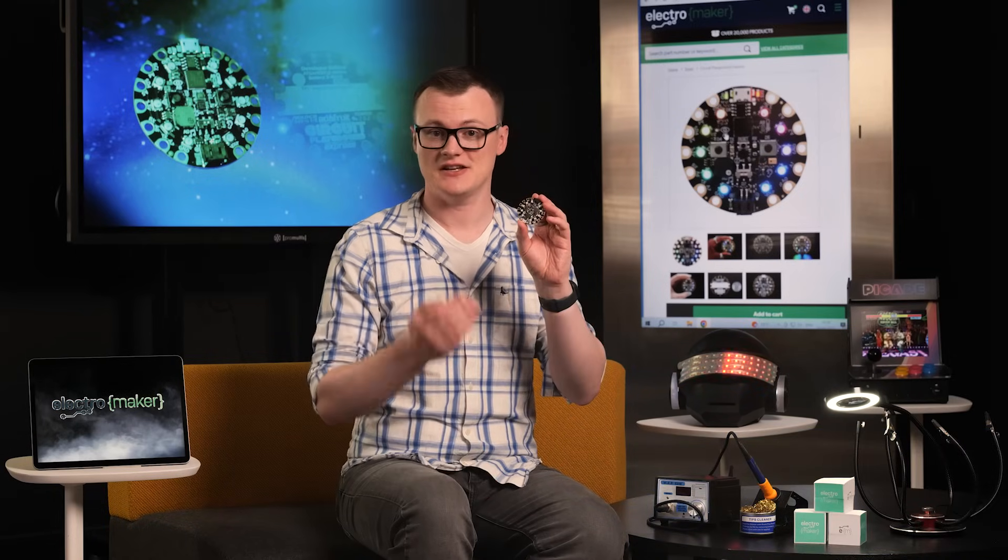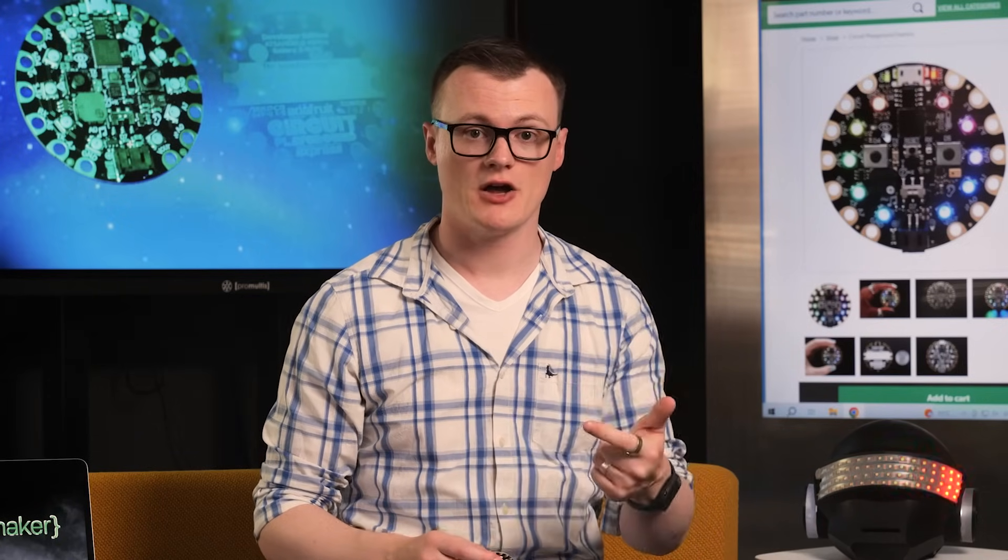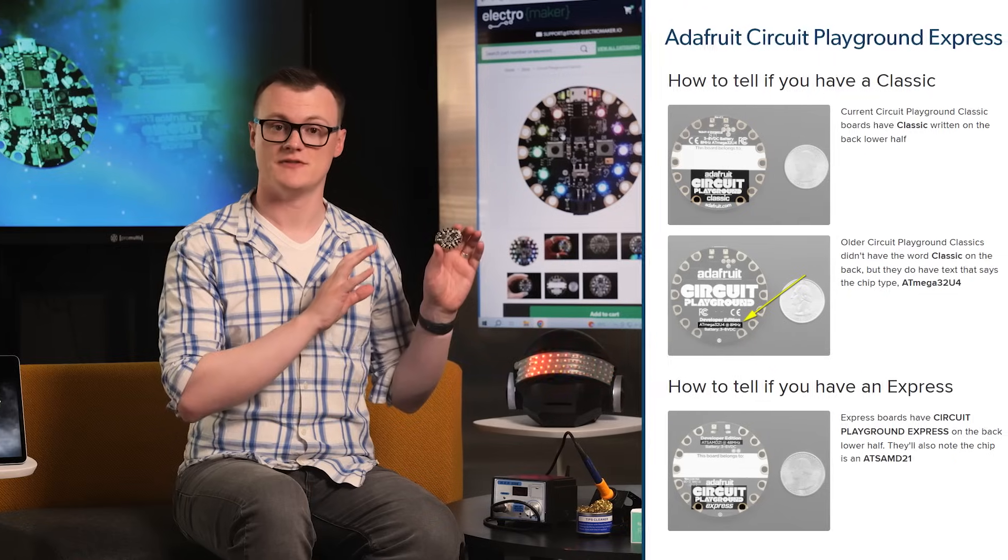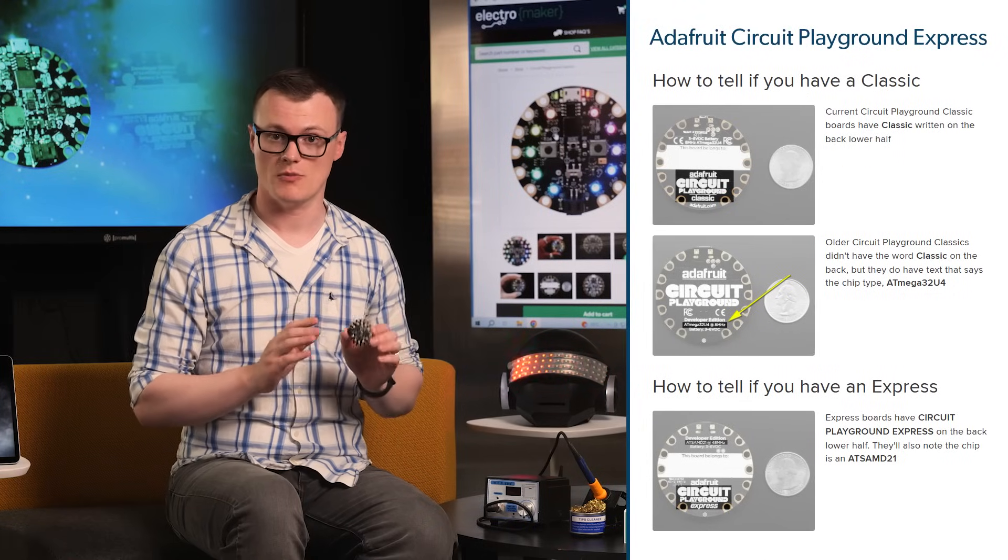Before we jump into the intricate details of this thing, we first need to understand the difference between this and its earlier version, the Adafruit Circuit Playground Classic. On both of these boards, almost everything is absolutely identical, both having the same shape, IO, sensors, and LEDs. However, the Classic version, which we will not be covering in this video, was released back in 2015 and uses the older ATmega32U4 microcontroller.